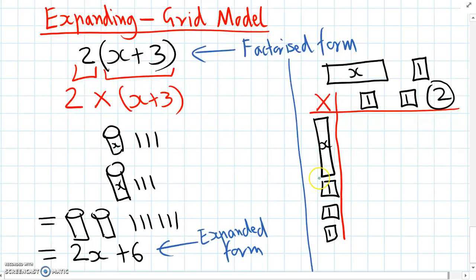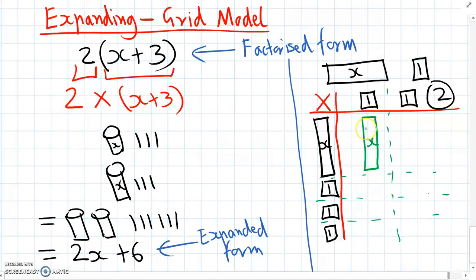Now, just like with the times tables, we're going to need to multiply each row and column to find out what the expanded form is. We'll start here, we've got x times one. Well, one lot of anything is itself, so one times x is just x, and we'll draw our rectangle tile. Another one times x, that's x again.